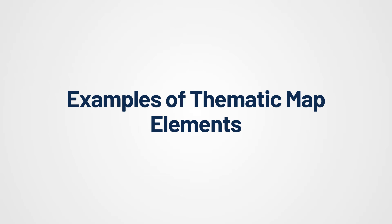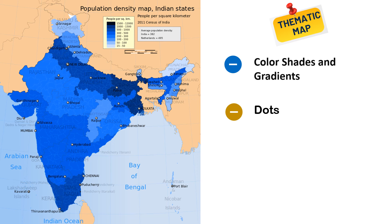Let's focus on some examples of thematic map elements. First, color shades and gradients — used to represent different levels of population density or growth rates, such as a map of India with darker shades of blue in densely populated states and lighter shades in sparsely populated states. Second, dots — used to show the capital city of each state, with a map of India representing clusters of population and highlighting urban and rural areas.